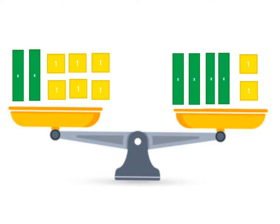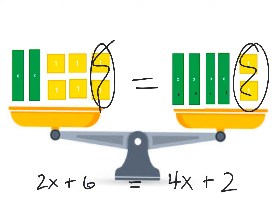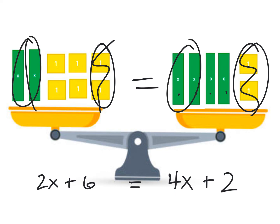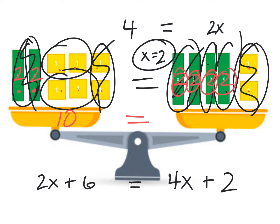Let's try another one. On the first side I see 2x plus six 1s, equal to 4x and two 1s. I see two 1s on both sides — those cancel. I also see 2 Xs on both sides — those cancel too. All I'm left with is 2x equals 4. Splitting 4 into two groups means X equals 2. Checking by plugging in 2: both sides equal 10. The scale is balanced.